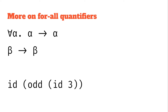The bottom one, beta to beta, means beta has a specific value which may not be compatible in different places. For example, if id has the type for all alpha, alpha to alpha, then it works: id takes a number, odd converts it to a boolean, and id again is the identity on that boolean. But if it were beta to beta, we'd determine beta is int from the inner id(3), and then the outer id would throw a type error when applied to a boolean. Hopefully that distinction helps — we'll go through more examples as we go along.